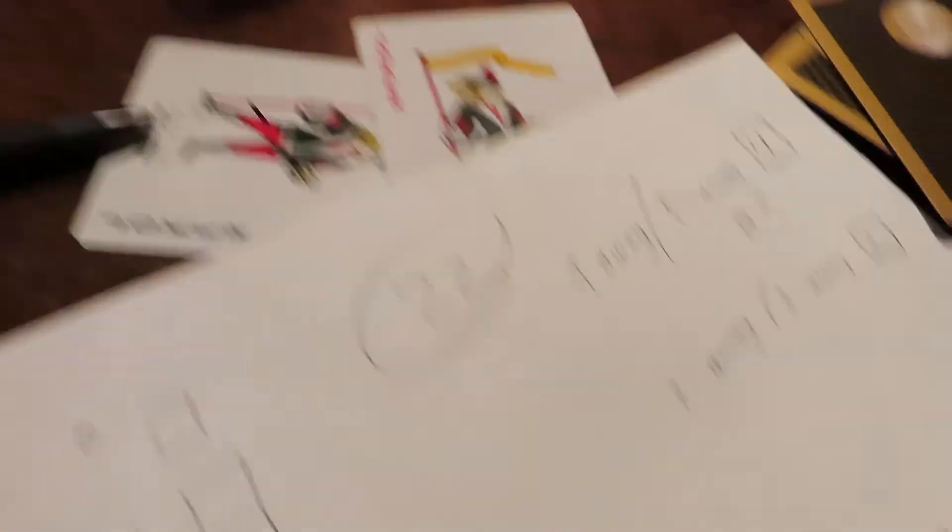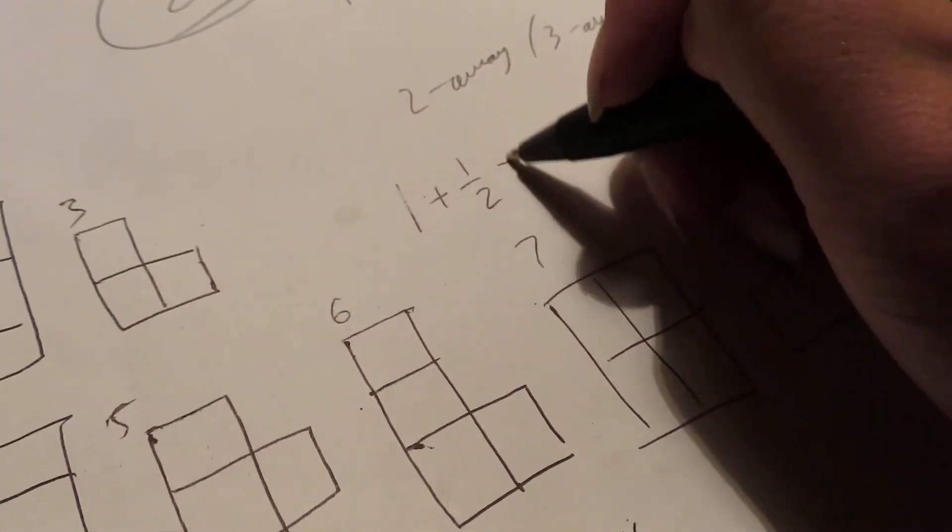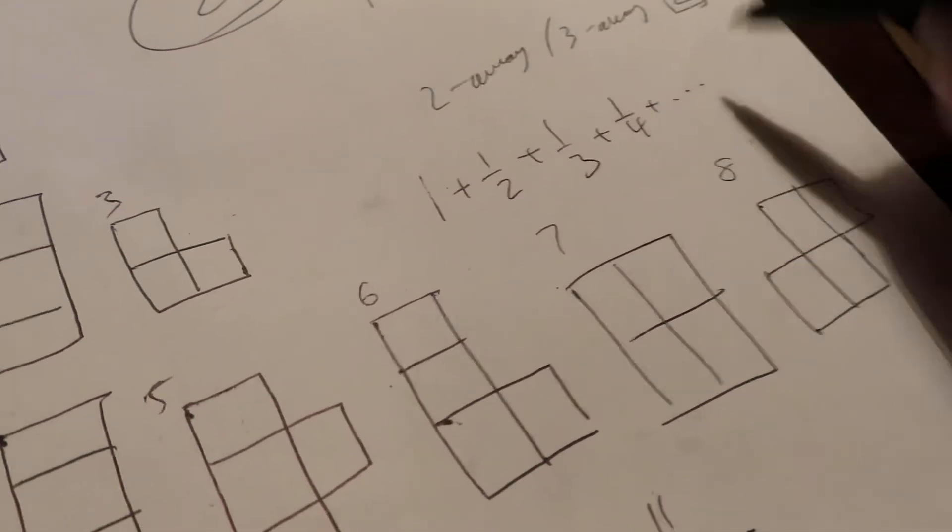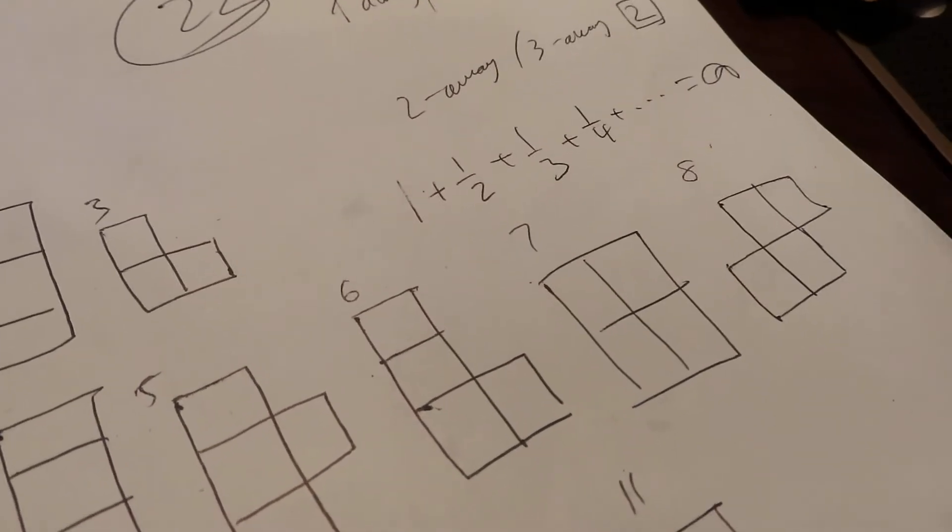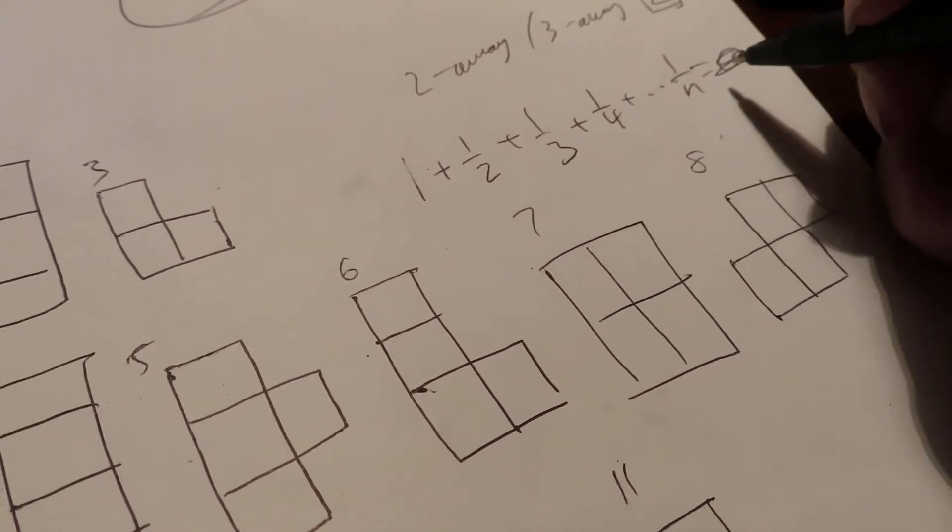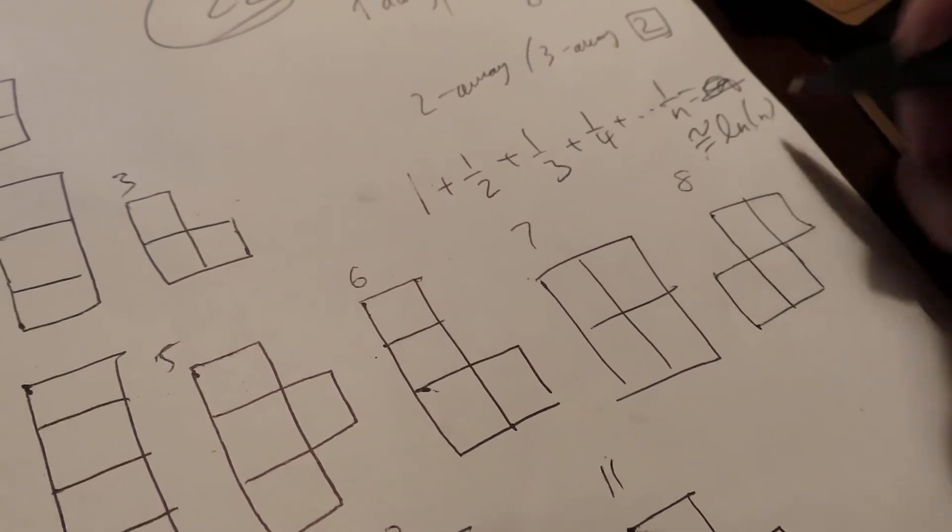So we had learned that 1 plus a half plus a third plus a quarter plus up to infinity, this diverges, right? But we learned that if we ended the series at 1 over n, that it approximately equals the natural log of n, right?